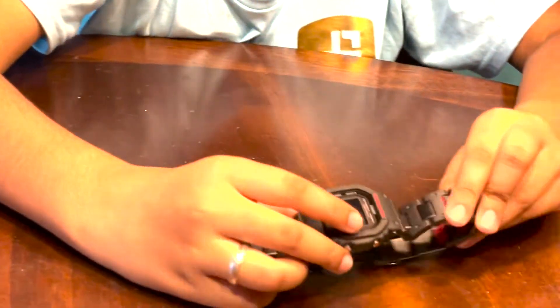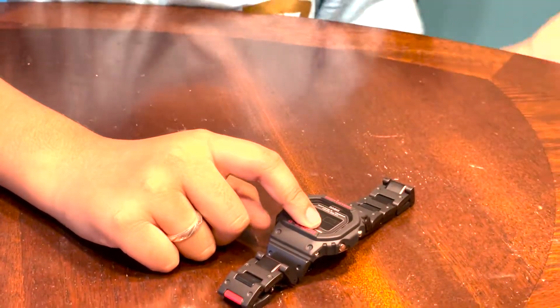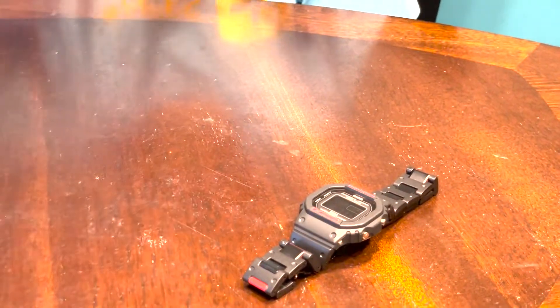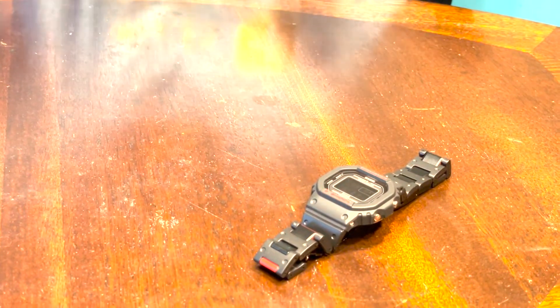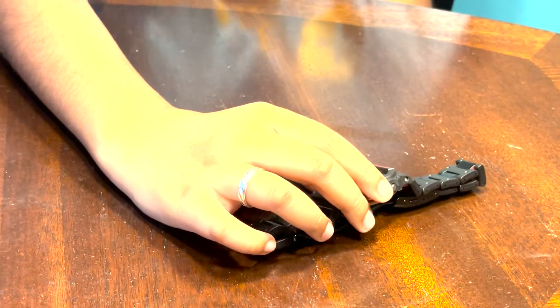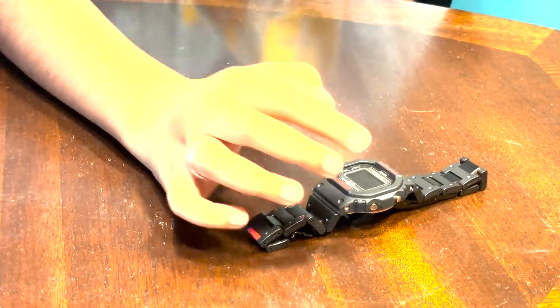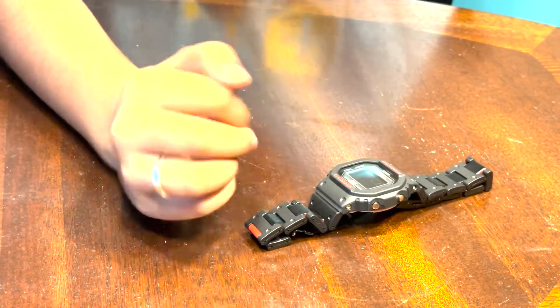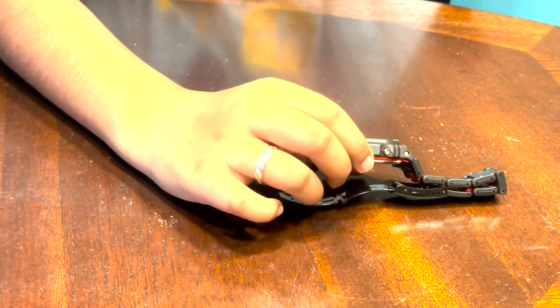This watch contains Bluetooth so you can connect it with your phone. It also gets light from the sun or room. Right now it's charging because it has Tough Solar which charges from solar, and also multi band six.